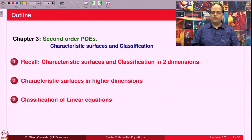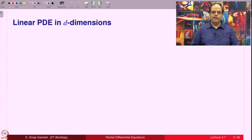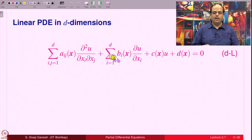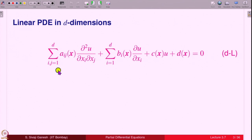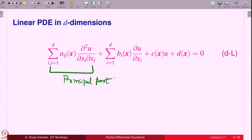We then classify linear equations in more than two variables. A linear PDE in D dimensions is an equation of the general form: sum over i,j from 1 to D of a_ij(x) times ∂²u/∂x_i∂x_j, plus lower order terms. This summation is called the principal part of the PDE - that part where the highest order derivatives appear, with power 1 coefficients that may depend on x, u, and first order derivatives.